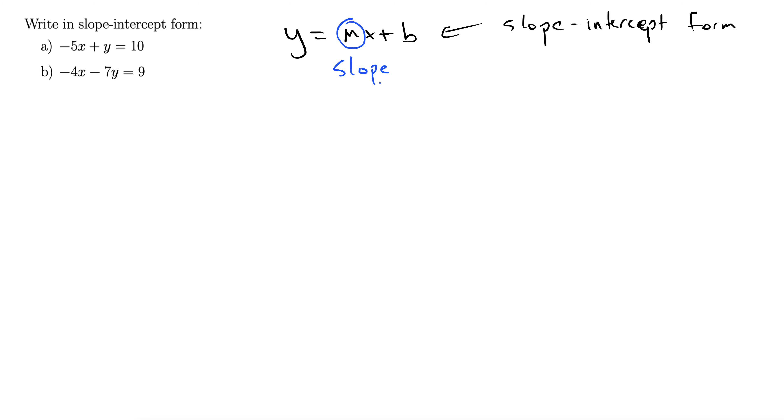The same m that we had from our slope formula. M is reserved for slope in this context. And then we have this b - the b is the y-intercept.